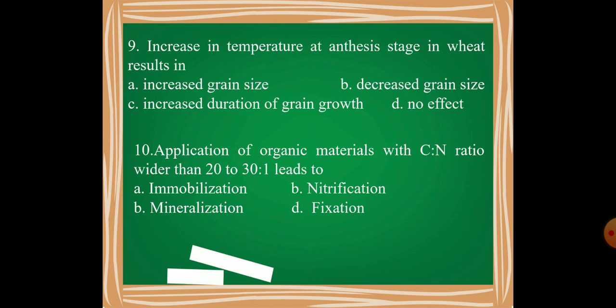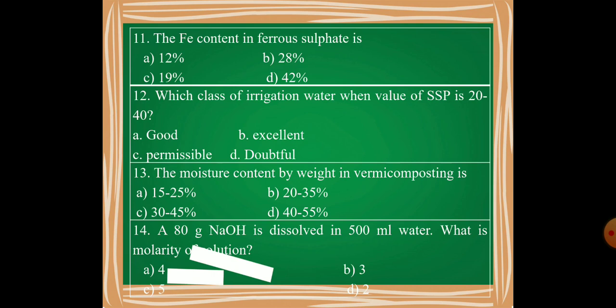Moving on, yes, eleventh question is: The iron content in the ferrous sulfate is 12%, 28%, 19%, or 42%? Then twelfth question is: Which class of irrigation water is there when the value of SSP is 20 to 40?